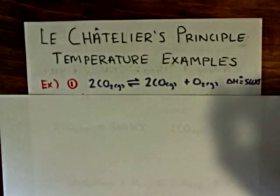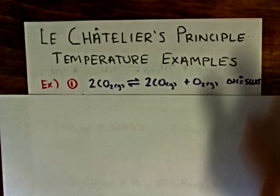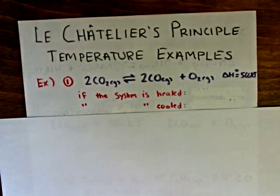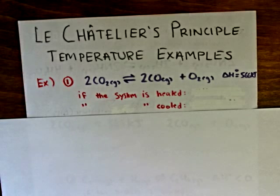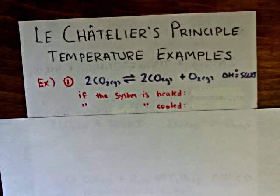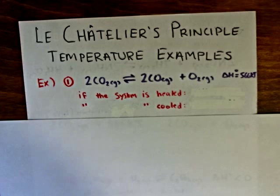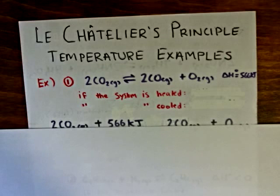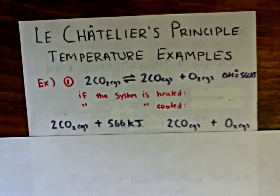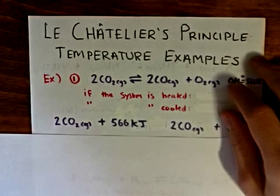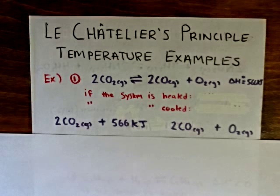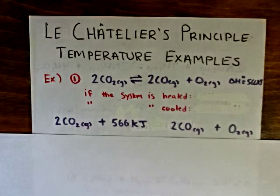In this first problem, we are given an equilibrium with the standard enthalpy of reaction as a separate value, and we're asked to determine in which direction the equilibrium will shift if the system is warmed or cooled. We know that this reaction is endothermic, so energy can be considered a reactant because the system gains heat.